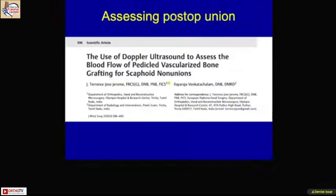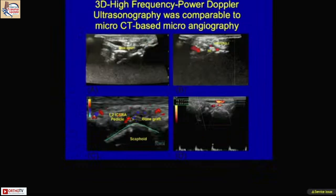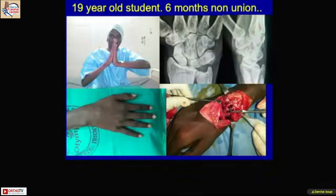Postoperative assessment of union is mostly done by CT scan. We also propose that high-power Doppler ultrasound is equally helpful for assessing scaphoid union. We compared postoperative power Doppler with CT scan in scaphoid non-union patients and found the results were equivalent. We published this series in the Journal of Hand Surgery, British volume.